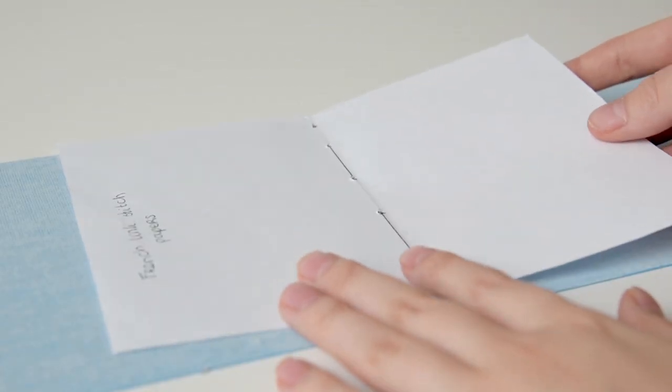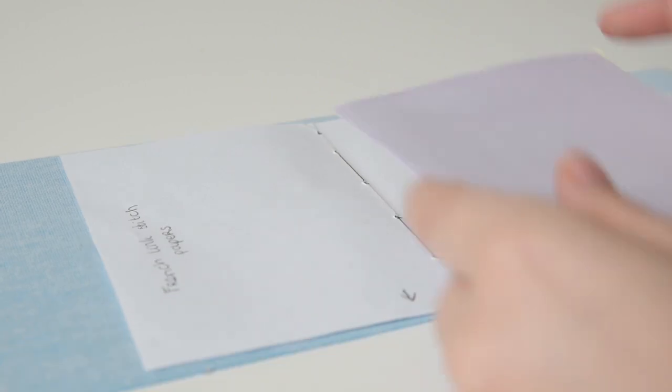Now comes the most complicated part, and that is creating the templates. You will need two templates. The first one is a template for the holes in the spine of your signatures.